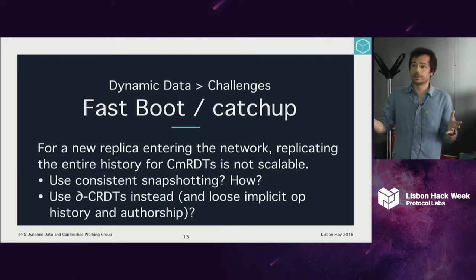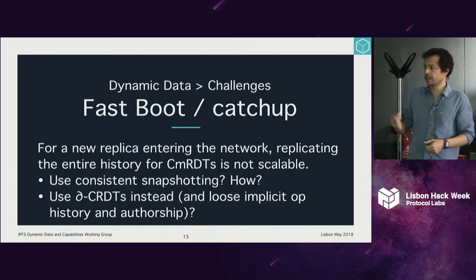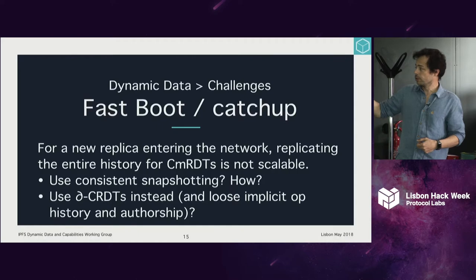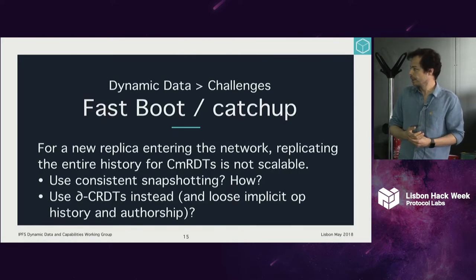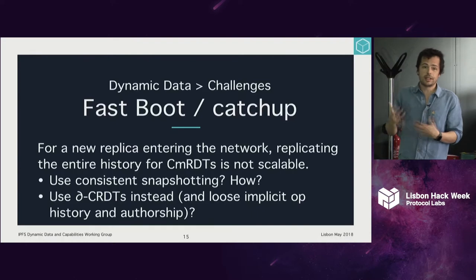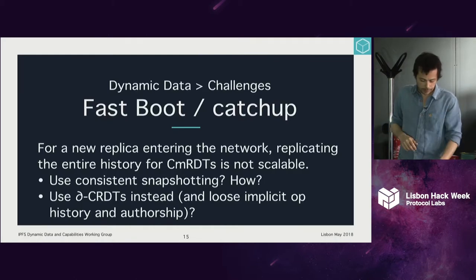For long-running documents, this operation log can be quite big, and convergence time is proportional to the size of this log. Is there a way to do consistent snapshotting? How can we achieve this? Should we use delta CRDTs instead, with the downside of losing the implicit history and all the authorship we can derive from operation-based CRDTs?